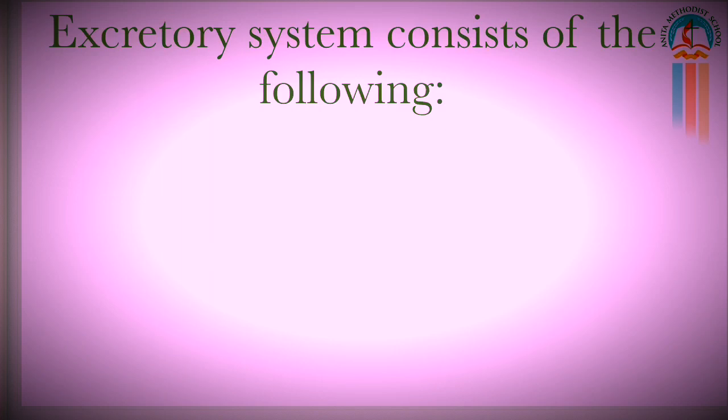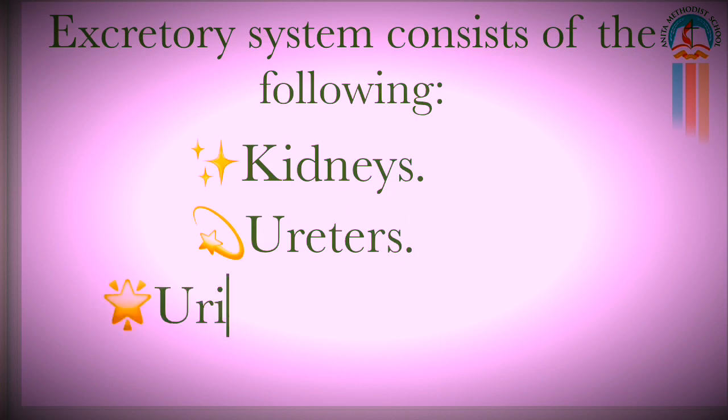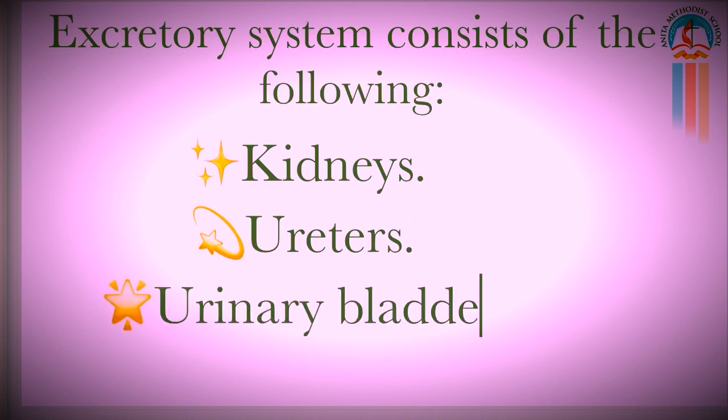The excretory system consists of the following: kidneys, ureters, and urinary bladder.